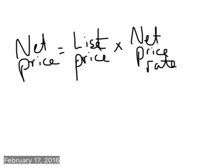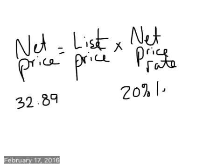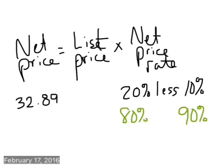So for a problem specifically to that, it would say, if the list price was $32.89, and you had chain discounts of 20% less 10%, okay, the first thing that I would do is I would find the compliments of the 20 and compliments of the 10. So compliment of the 20% would be 80%, so those two numbers need to add up to be 100, and then the compliment of 10% would be 90.